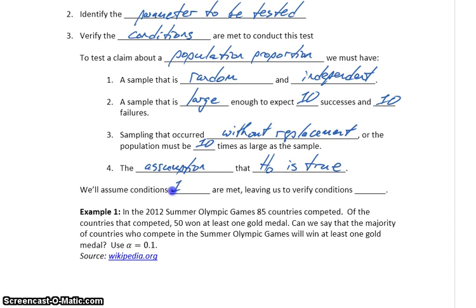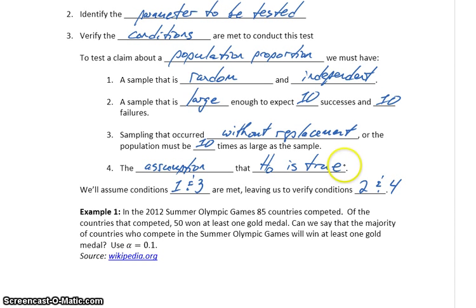We're going to assume that conditions 1 and 3 are met, since those can be difficult to verify if we don't know how a study was conducted or how information was collected. That leaves us with conditions 2 and 4 to verify. There's nothing we really need to verify for condition 4 — it's just something to keep in mind: the assumption that the null hypothesis is true. But we will need to verify that we have at least 10 successes and 10 failures.